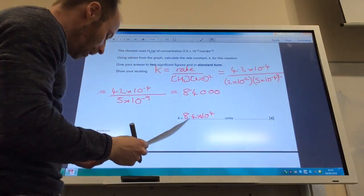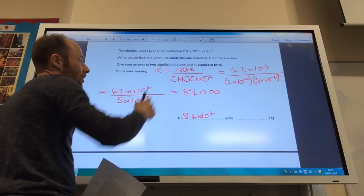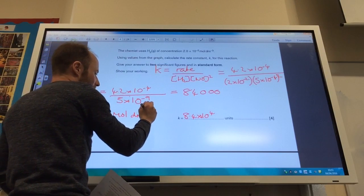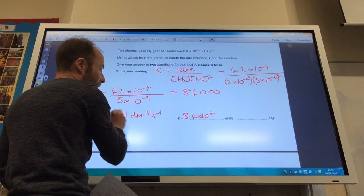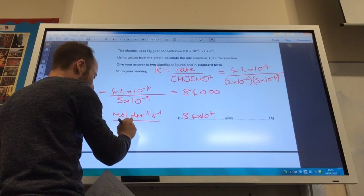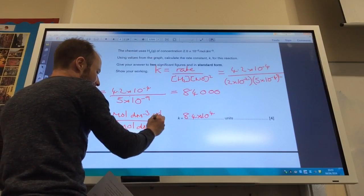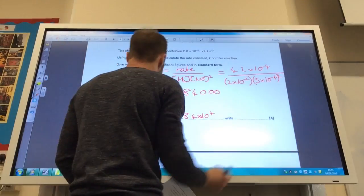Now units-wise, it's reminded me, it wants me units. Rate, of course, is in moles per decimetre cubed per second. These are all concentration values in moles per decimetre cubed, and there's three of them, so that's cubed.